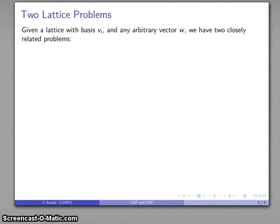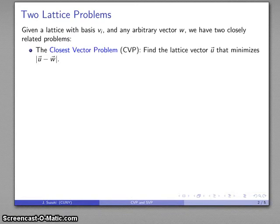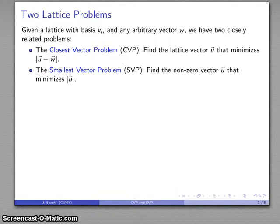Given any lattice with whatever basis we have and any arbitrary vector w, we have two problems. The Closest Vector Problem (CVP): find a lattice vector that minimizes the distance between the given point and the lattice point. And the Shortest Vector Problem (SVP): find the non-zero lattice vector that minimizes the magnitude.